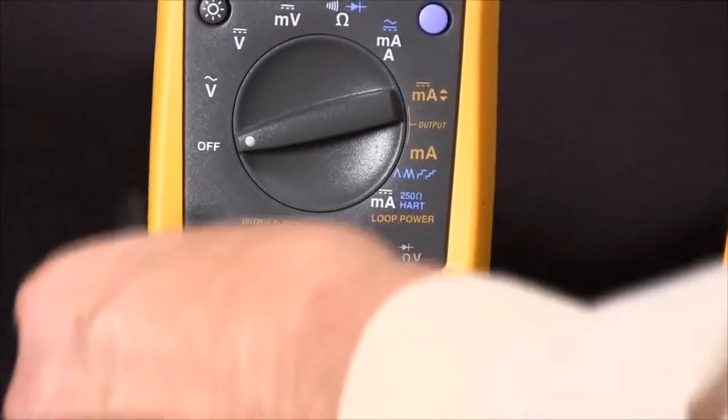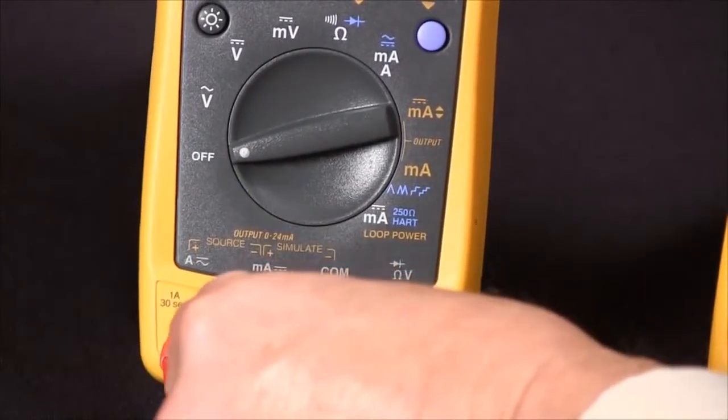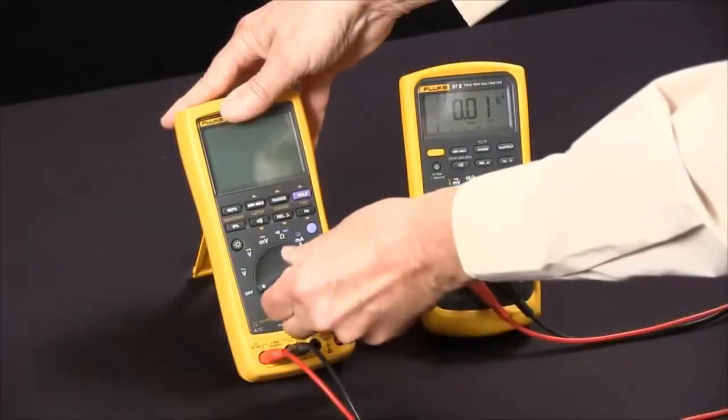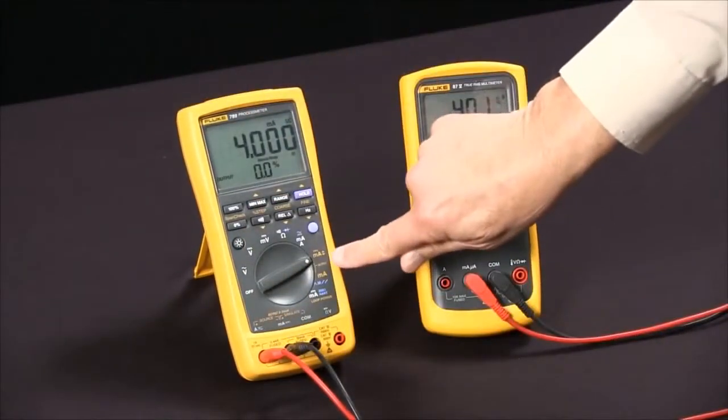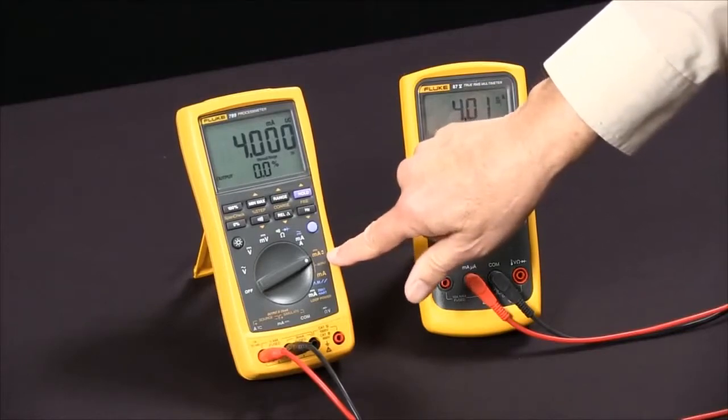Then we'll rotate the rotary knob over to the DC milliamp position. From this point we have several choices to control it.